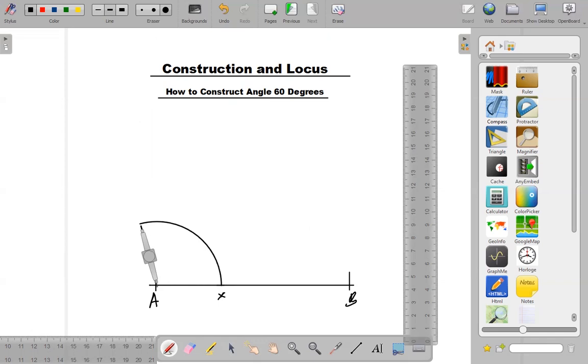So we shift the steel point now to point X. Use your steel point at point X. With the same radius, make sure you don't close the compass. With the same radius now, your steel point at point X, cut the arc.